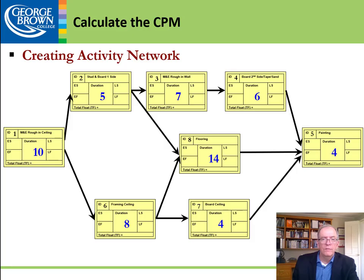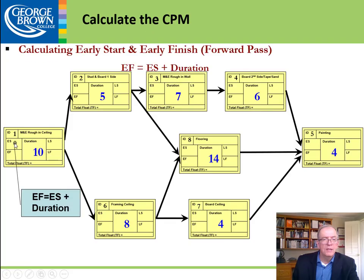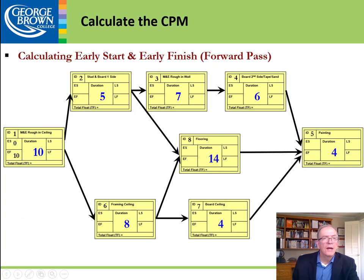Now, starting our project, you assume you're starting at zero — that's the early start date and the start of the project. We take our duration of 10 and add that to zero, giving us an early finish of 10. The early finish of M&E rough-in then becomes the early start of stud and board side.